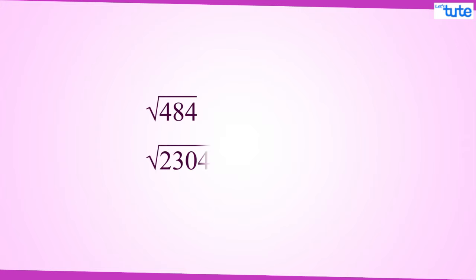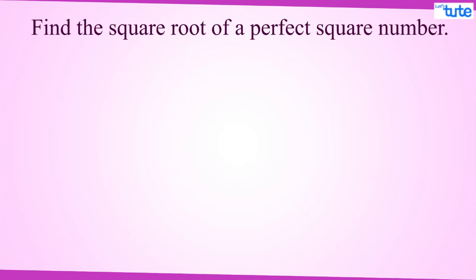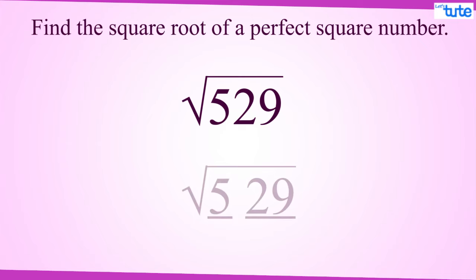For example, square root of 484 and 2304 is 22 and 48 respectively. Now we are ready to go ahead and find the square root of a perfect square number. We have 529. So we'll start with our first step. First step is to make the pairs of unit place of numbers from right hand side. So here 29 will be one pair and 5 will be in another pair.